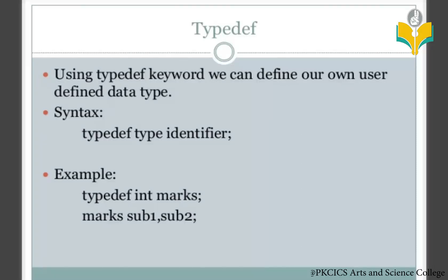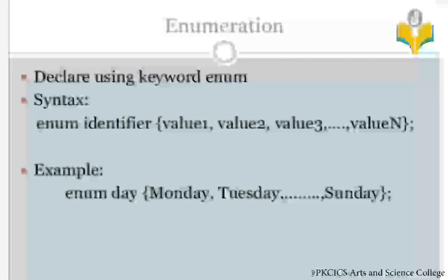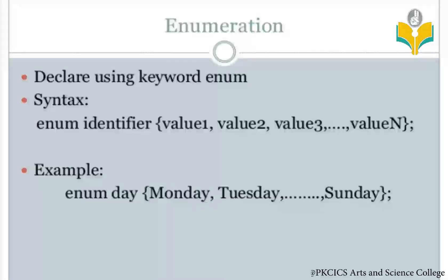Then we can declare variables: marks sub1, sub2. Here sub1 and sub2 are variable names of type marks, which is the user-defined type meaning integer. That is how we use the typedef keyword.